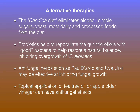Alternative therapies for treating Candida include the Candida diet, which eliminates alcohol, simple sugars, yeast, most dairy, and processed foods. Because Candida albicans thrives off byproducts of sugar, this diet is very effective. Probiotics help repopulate gut microflora with good bacteria to restore natural balance and inhibit Candida overgrowth. Antifungal herbs such as pau d'arco and uva ursi may inhibit fungal growth. Topical application of tea tree oil, apple cider vinegar, or coconut oil may also have antifungal effects.